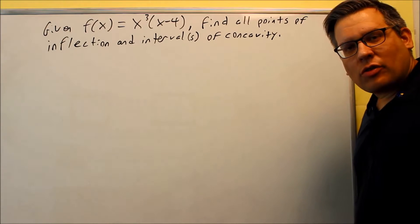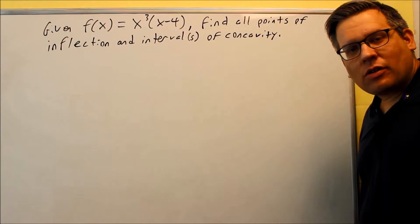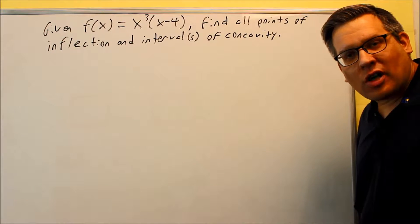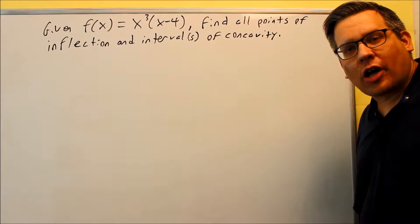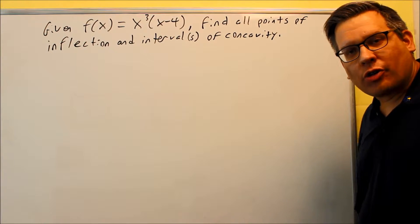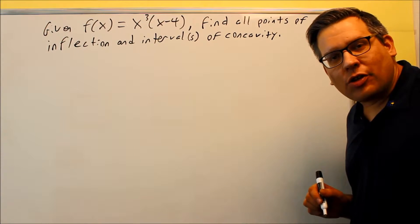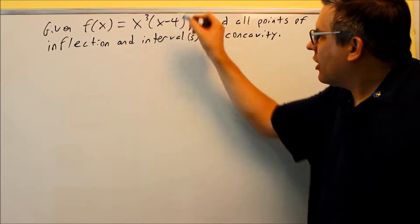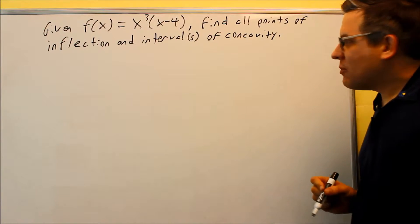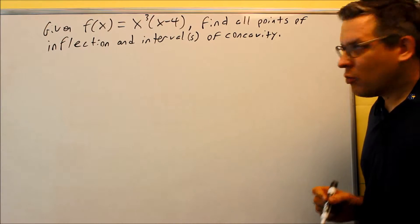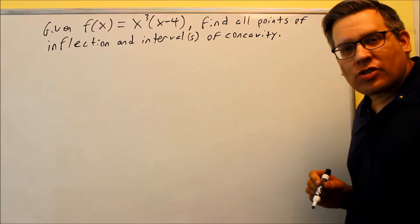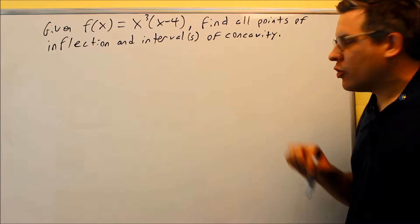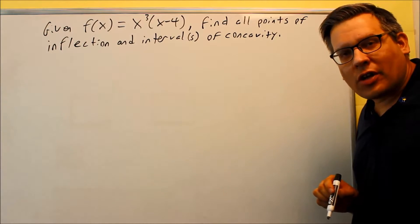In the previous video, we talked about reading concavity off of the graph itself, and so now we're moving on to problems where you're going to be doing this algebraically using calculus. We're given x cubed times x minus 4, and we want to find the point of inflection, if there are any, and then the interval or intervals of concavity.